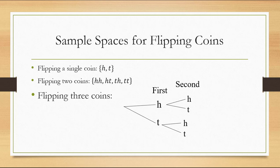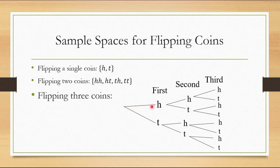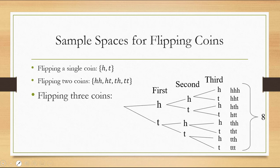What about three coins? We would extend this diagram — called a tree diagram — to a third coin. Regardless of what we got for the first and second, in each case we're going to have two possibilities for the third coin, either heads or tails. Notice that the first branch covers heads-heads-heads, the second branch covers heads-heads-tails, the third branch heads-tails-heads, and so on. Each branch covers a different scenario and every scenario is covered. Listing all possible outcomes next to their corresponding branch, we see there are eight branches and eight possible outcomes in the sample space.